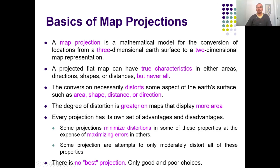In addition to aerial coverage, each projection has its own set of advantages and disadvantages. Some projections minimize the distortions of one property and maximize the errors in other properties. Some projections will moderately distort all the properties in order to have a compromise. So there are projections with true characteristics of certain properties, and there are moderately distorting map projection systems. We will discuss all of these in upcoming slides.